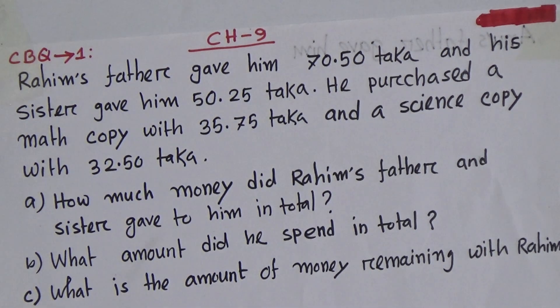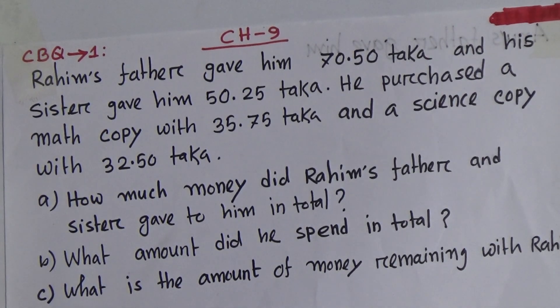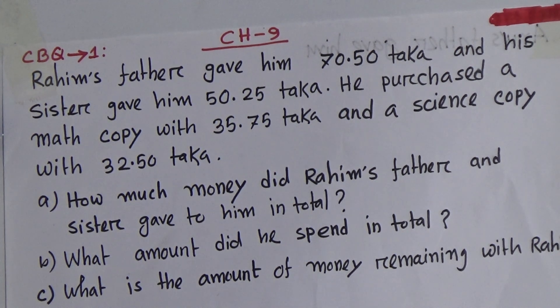Let's start the class. Look, Rahim's father gave him 70.50 taka and his sister gave him 50.25 taka. Students, after decimal you have to read 25, not 25.